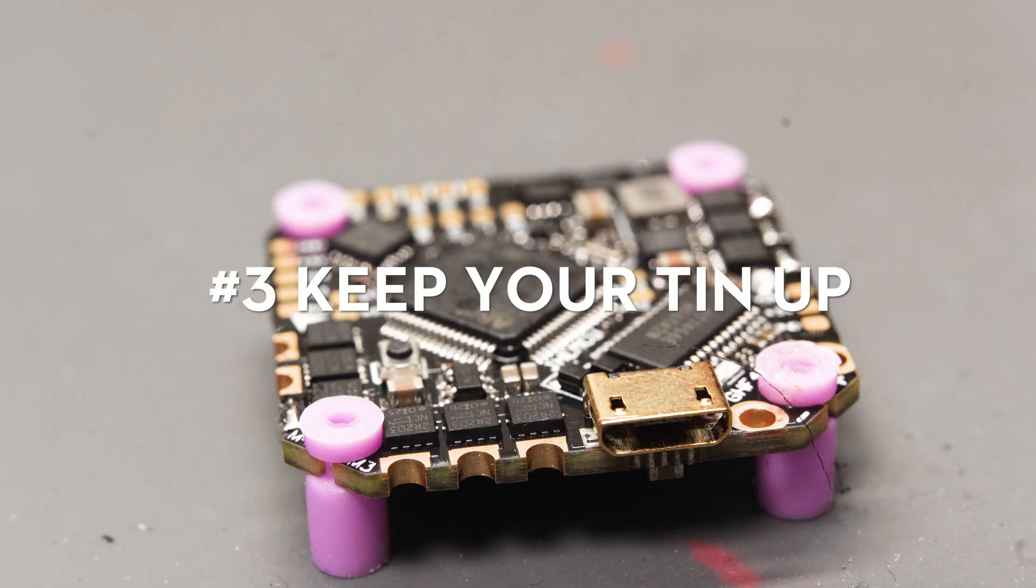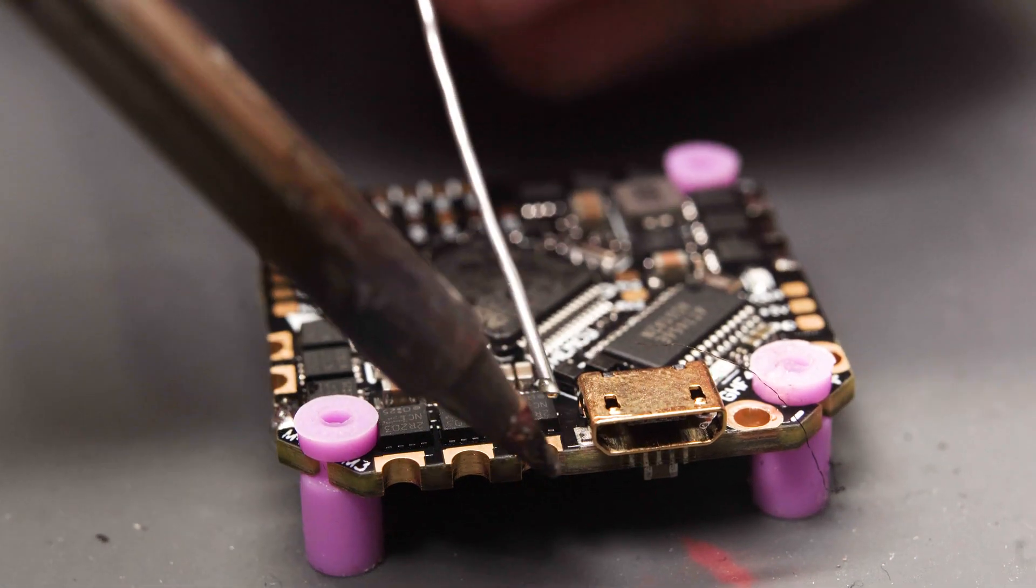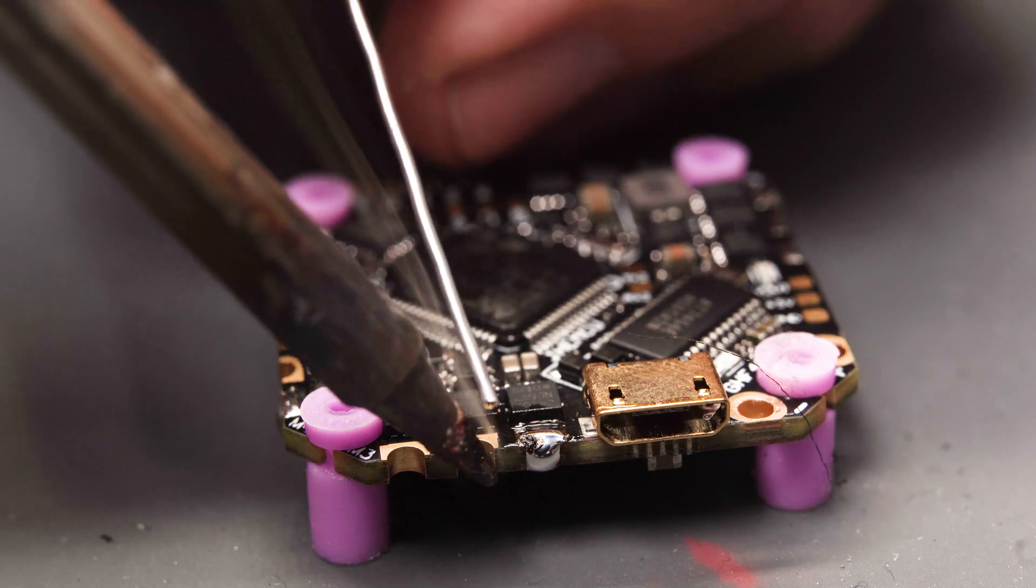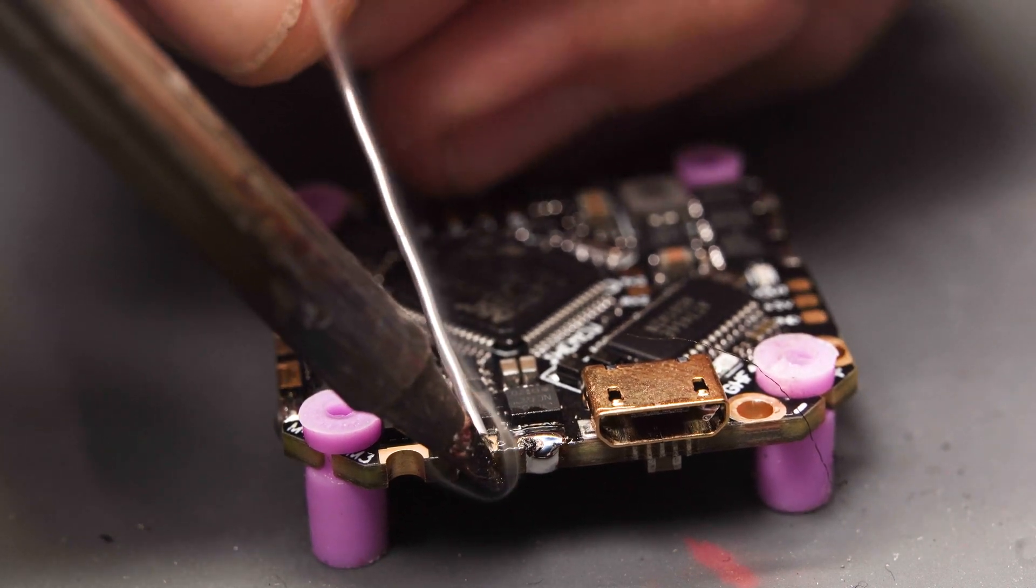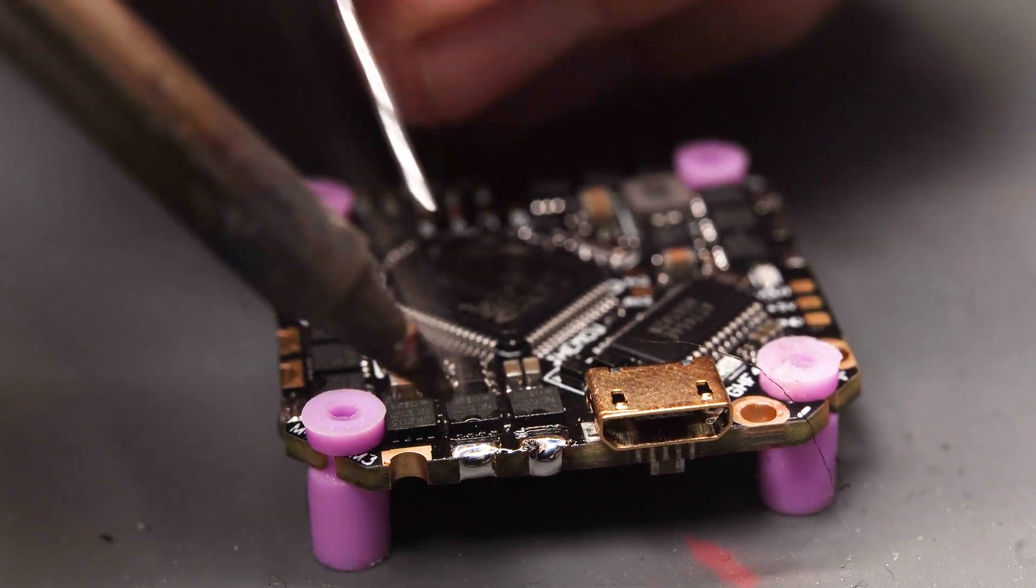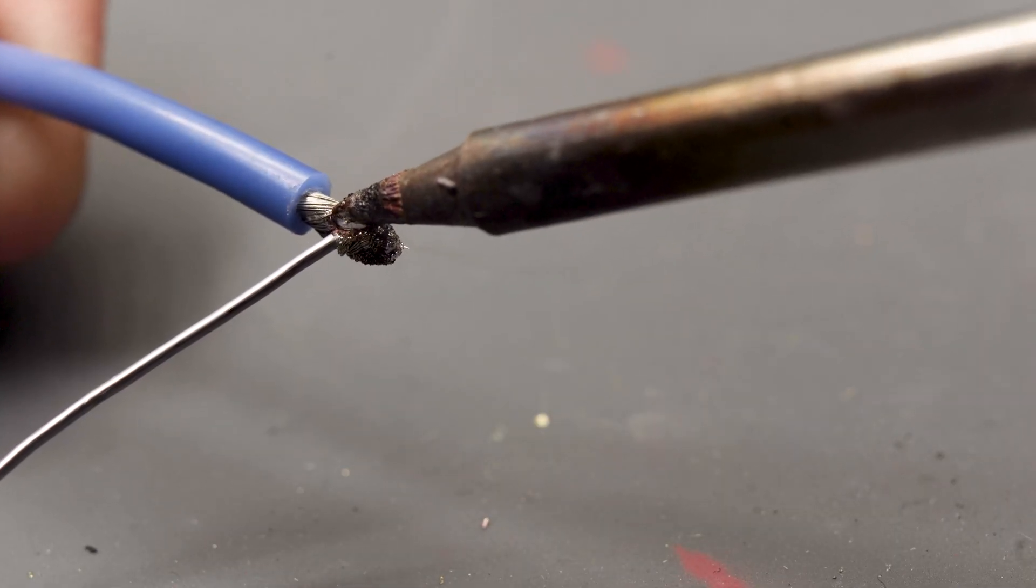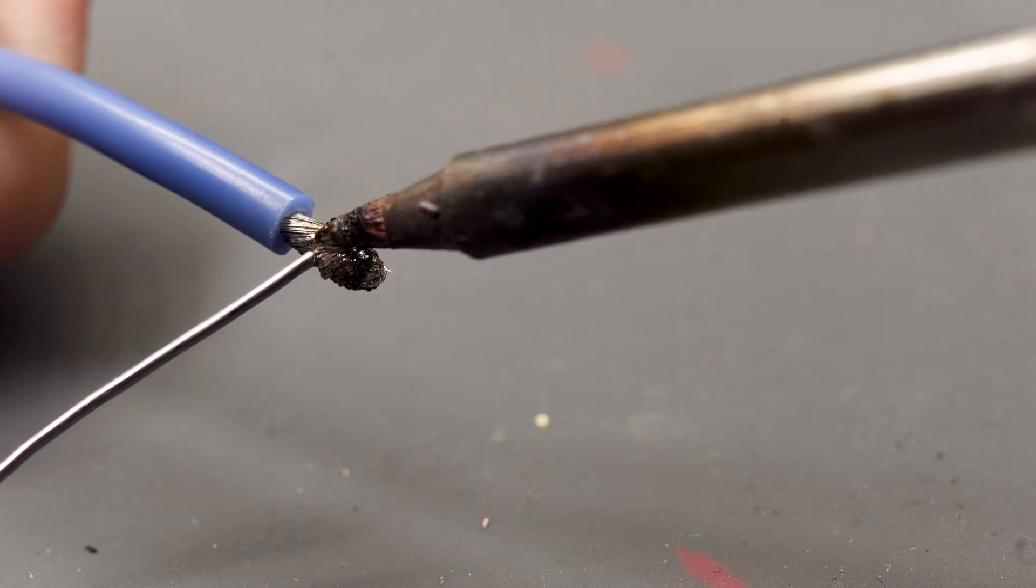Tip three, pre-tin all the pads you plan on soldering to. Pre-tinning is basically putting solder on the pad and the wire itself before you actually join them together. If you don't do this you're going to end up with a cold solder joint or solder not transferring all the way through the pad and or the wire which results in possibly breaking off with a little bit of stress.